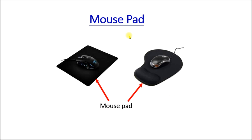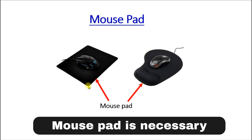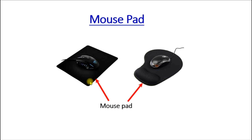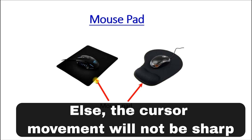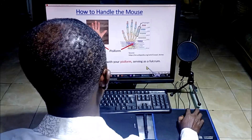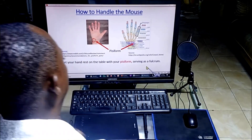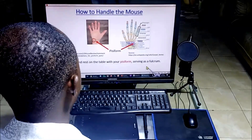Here we have a mouse pad. A mouse pad is a surface on which you place the mouse as you use it to control your computer. It is necessary you have a mouse pad, or else your cursor will not be moving accurately enough.